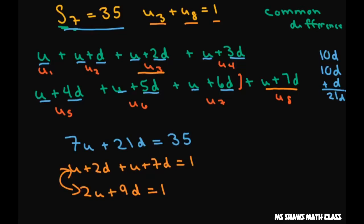So now we have a system of equations. We're going to have 7U plus 21D equals 35. And we also have 2U plus 9D equals one. So we have a system of linear equations. To do the process of elimination, what I'm going to do is multiply my first equation by 2 and my second equation by negative 7. And that's going to eliminate my U.